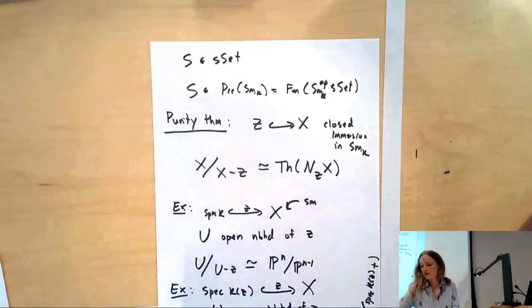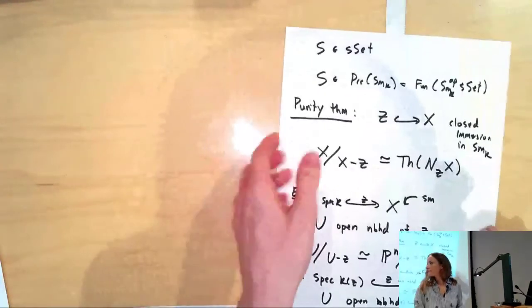This example can work if you don't have a rational point. We could have a point whose coefficients were K(Z) in X, and then we'll get P^n over K(Z) over P^(n-1) K(Z), or the smash product of this sphere with spec K(Z) with a disjoint base point.